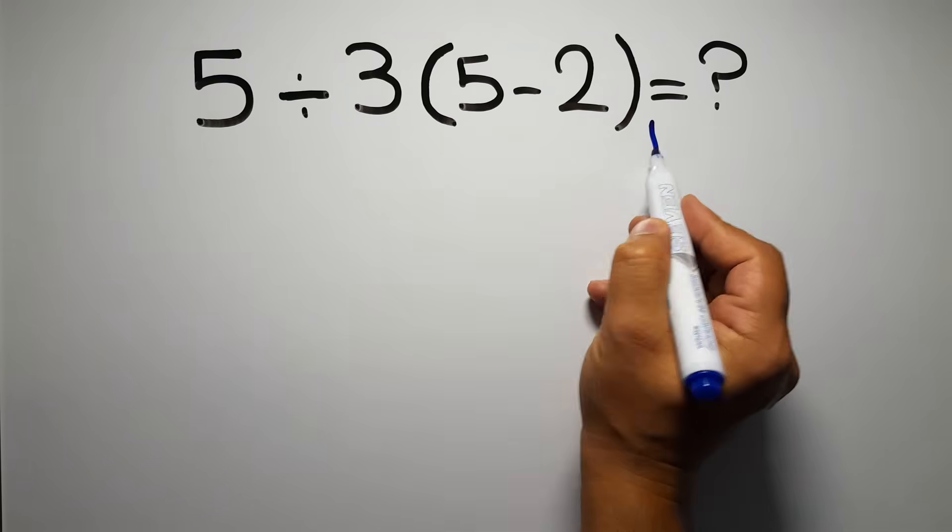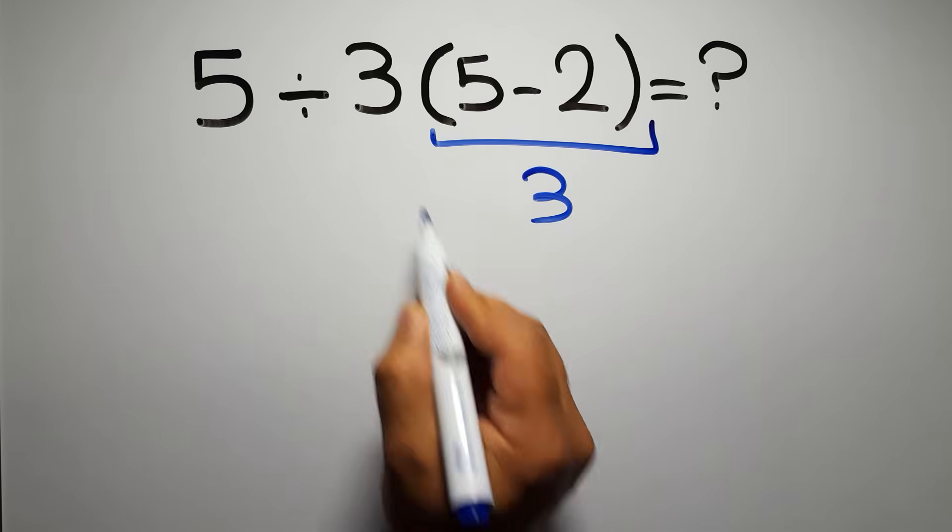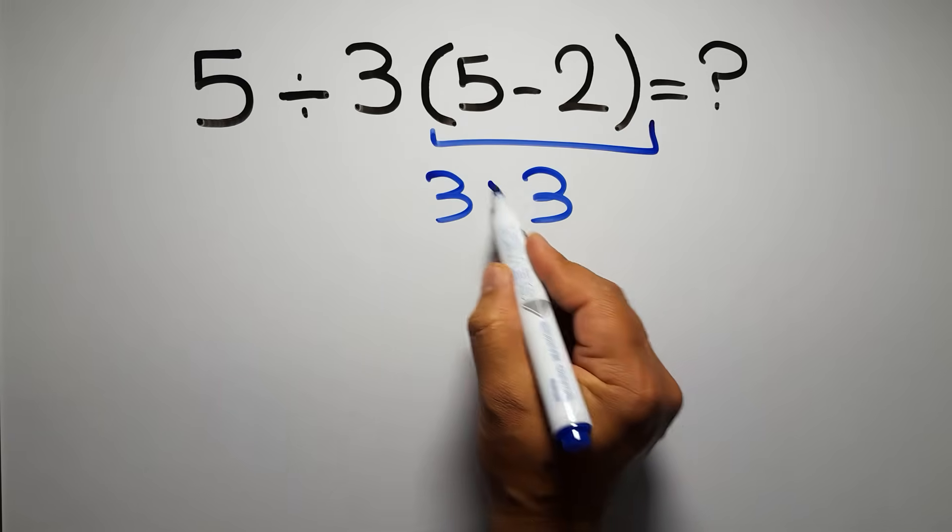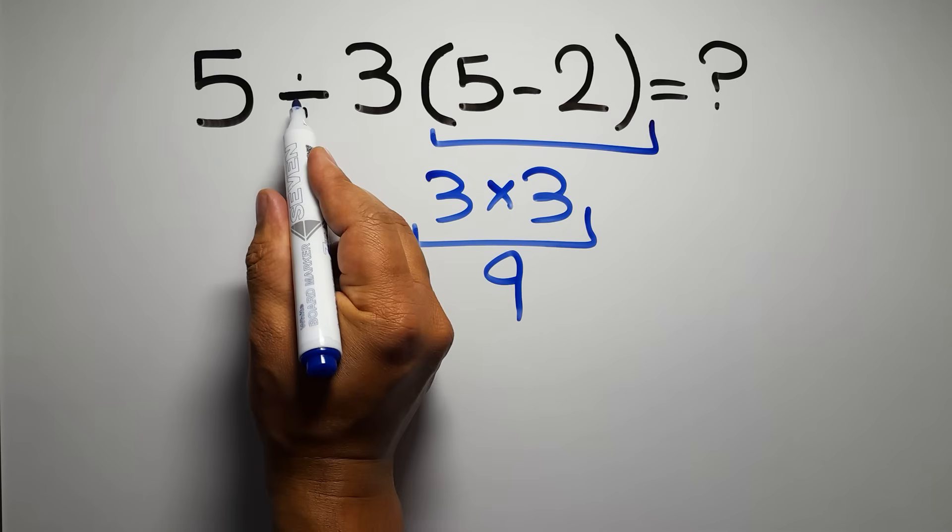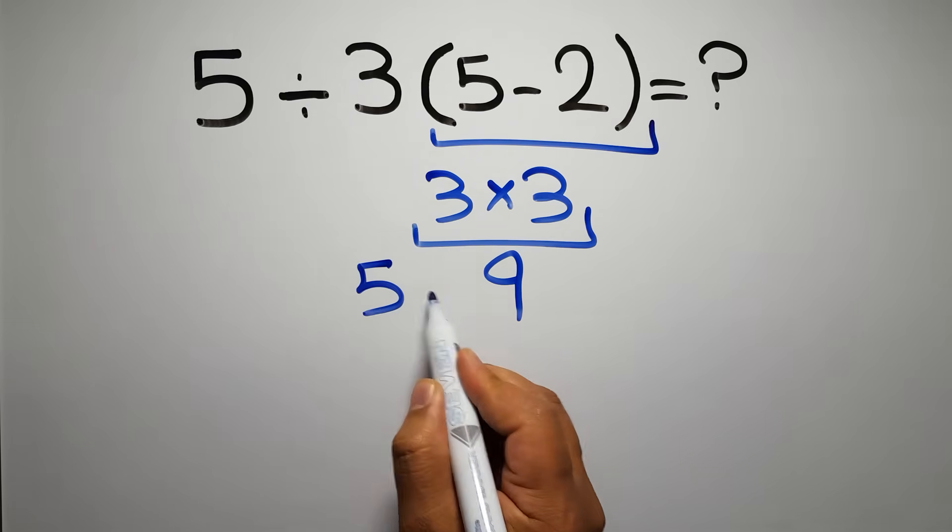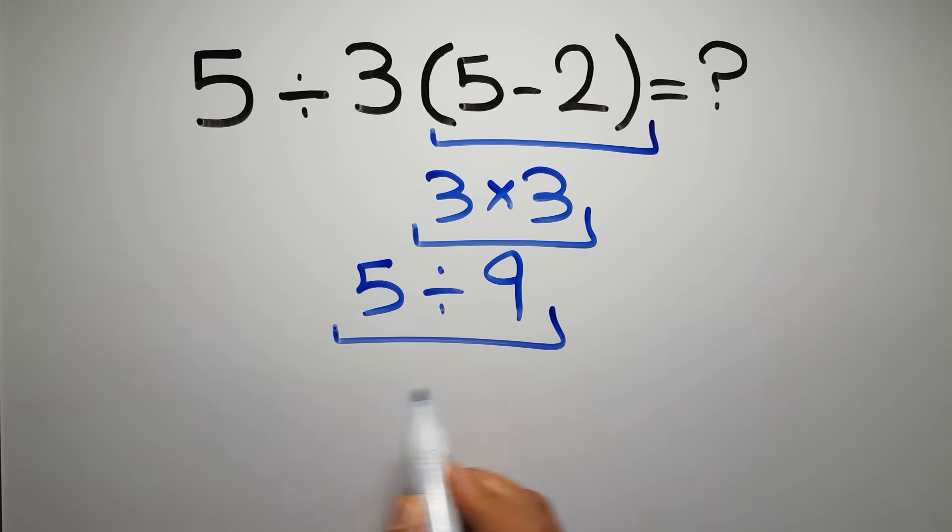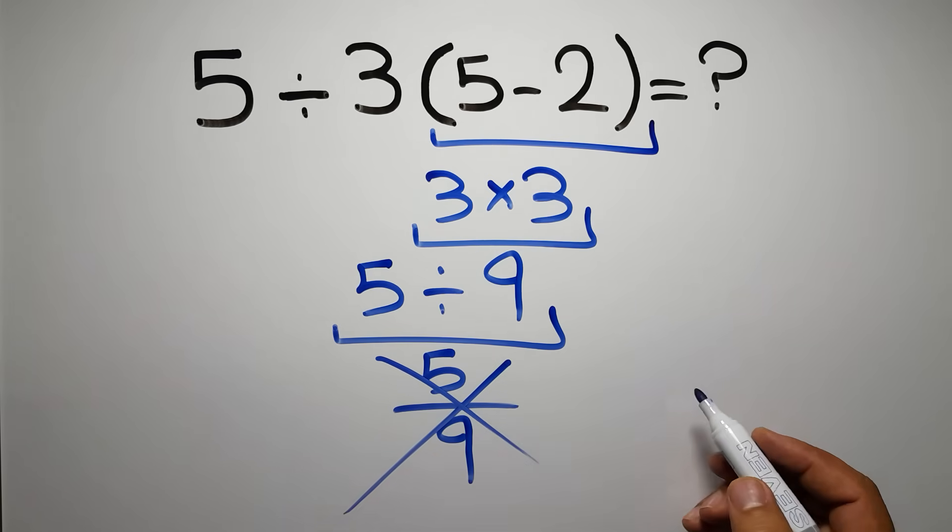5 minus 2 gives us 3, and 3 times 3 is 9, so 5 divided by 9 equals 5/9. But this answer is not correct because according to the order of operations, first we have to...